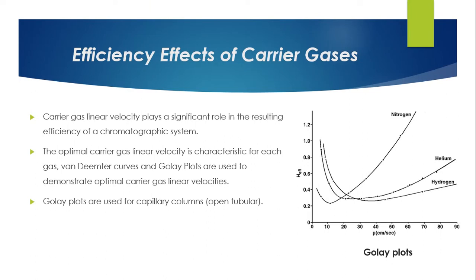Carrier gas linear velocity plays a significant role in the resulting efficiency of a chromatographic system. The optimal carrier gas linear velocity is characteristic for each gas. Van Deemter curves and Golay plots are used to demonstrate optimal carrier gas linear velocities. Golay plots are used for capillary columns, specifically open tubular columns.